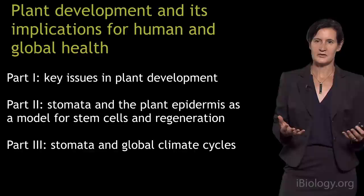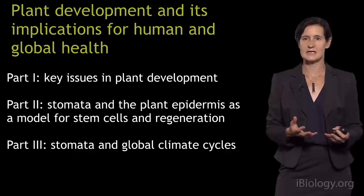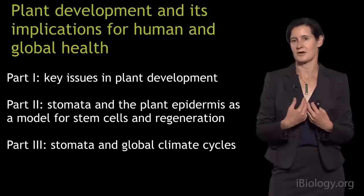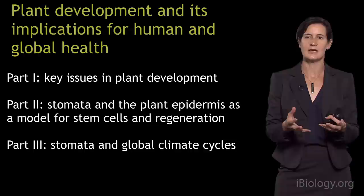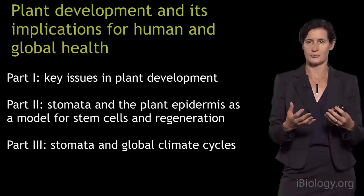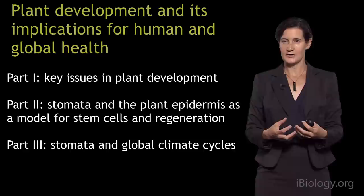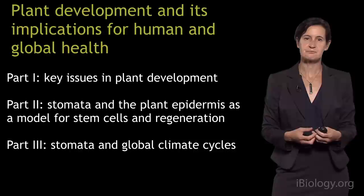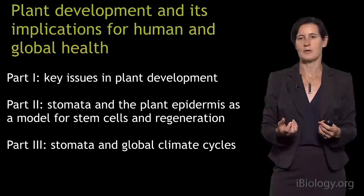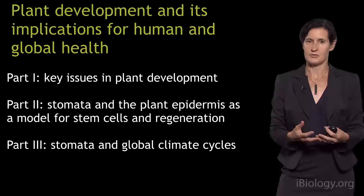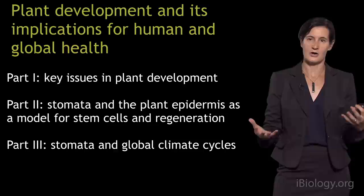I'm going to divide this into three different sections. I'll begin with a broad overview about key issues in plant development — why are plants important, what can we learn from them, and why should we care about how they develop. I'll tell you about specific cells called stomata that are important for getting carbon dioxide from the atmosphere into the biosphere. Then in Part 2 I'll continue with stomata as a model for stem cells, and in Part 3 return to how plants and the environment interact and the effect on humankind.